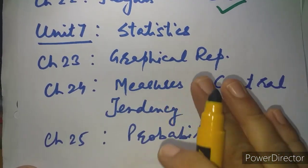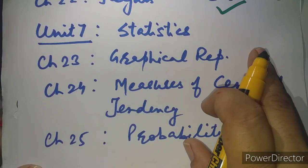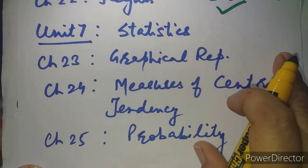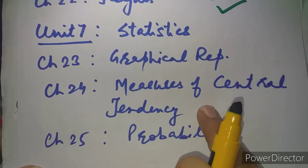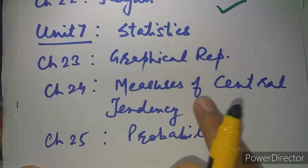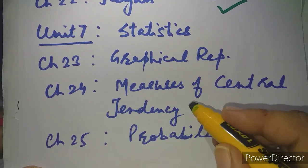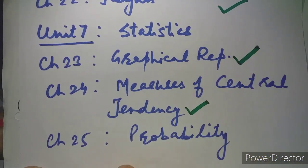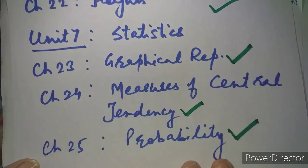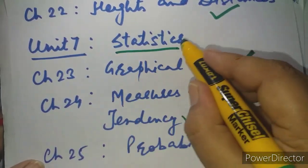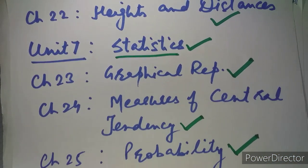Unit Number 7 is Statistics — a very major and scoring portion for the exams — containing three chapters: Chapter 23, 24 and 25. Graphical Representation includes histograms and ogives. Measures of Central Tendency covers three methods to find mean, median using ogives, quartiles, and mode using histograms — everything included totally. Probability, a small but interesting and scoring topic, has also been included as it is. Unit 7 — no change at all.